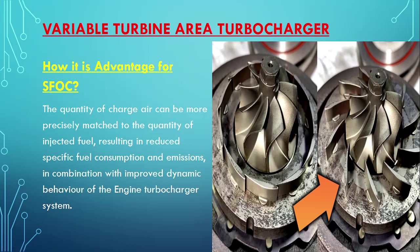The second question will be: how is the quantity of charge air precisely matched? It is precisely matched because of this variable turbine area. As per the variable turbine area, we are varying the turbine area, and as the turbine area varies, the amount of charge required for each different load is varied, and depending upon that it is matched with the fuel injected. This is how it improves the SFOC.